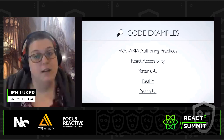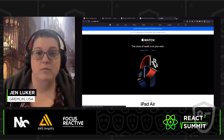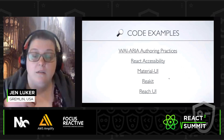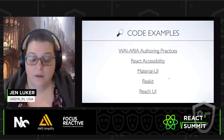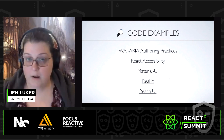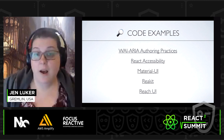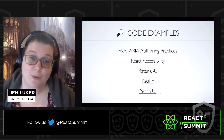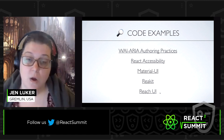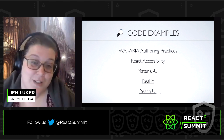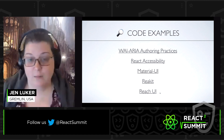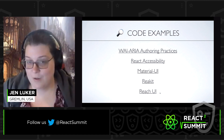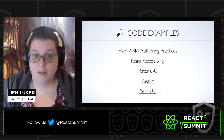React Accessibility is React's actual website that walks you through the React-specific formats and suggestions for how to keep their components accessible. Material UI, React Kit, and Reach UI are all component libraries that are starting you out with accessible components. You can take those and build upon them or compose them in order to make the websites that you're working with. It's a beautiful way of developing a website with components that have already been vetted and troubleshot — and they're also open source.